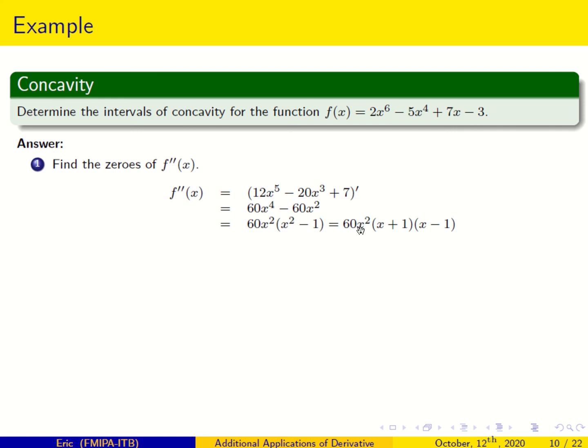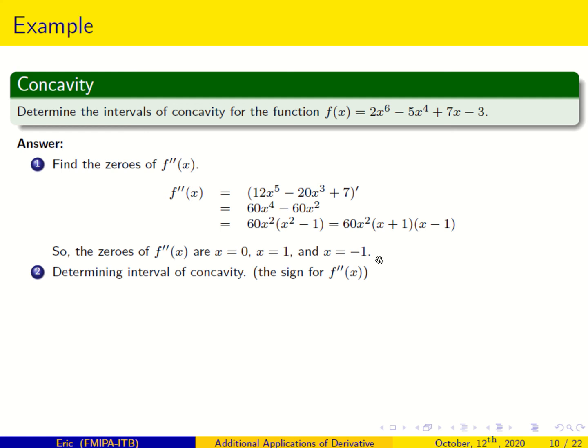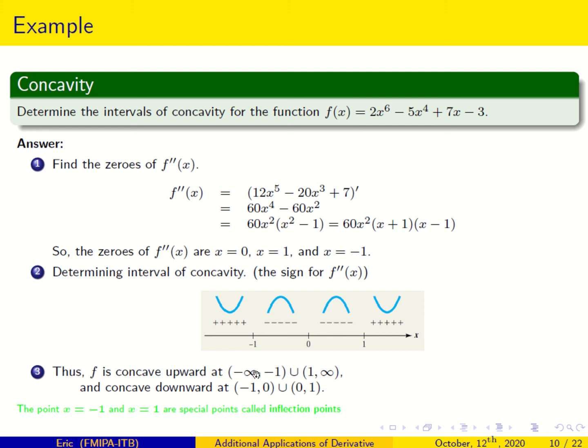Now I find the sign diagram of f''. The sign pattern gives: plus, minus, minus, plus across the intervals defined by the zeros. Where f'' is positive, f is concave upward; where f'' is negative, f is concave downward. So we conclude that f is concave upward on the outer intervals and concave downward on the middle intervals.